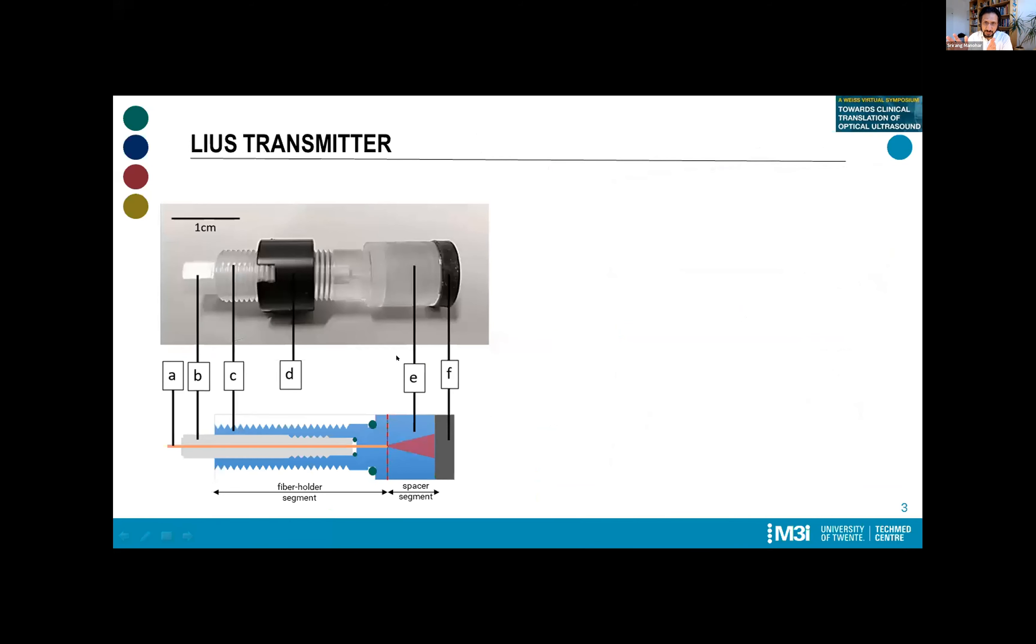Let's go immediately into what such a Lewis transmitter looks like. Here's a photograph and here is a schematic. We have a Lewis absorber which is mounted onto a segment which we call the spacer segment, which in turn is mounted onto what we call a fiber holder segment. All of these parts are made from clear perspex. The fiber holder arrangement can accommodate a chuck which can be screwed in, and that carries an optical fiber. We use a 600 micrometer multimodal fiber. This entire assembly can be fitted with nuts and a screwing arrangement with O-rings to make a watertight seal in the imaging tank.